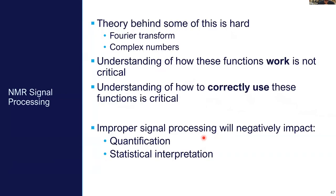For NMR data processing, you have to start with signal processing. Some of the theory is complicated because it involves Fourier transforms and complex numbers. Fortunately, you don't actually have to know how they work, but you do have to understand how to correctly apply these functions — if you don't apply them correctly, you'll get incorrect quantification and incorrect statistical interpretation. This is not a solved problem in routine automation, which is why you still need to understand what's going on.